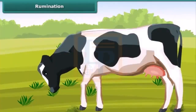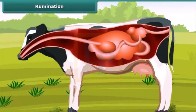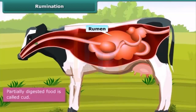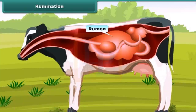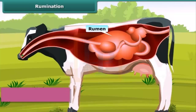Have you observed a cow chewing continuously even when it is not eating? What happens is it quickly swallows the grass and stores it in a rumen, where the food gets partially digested and is called cud. Later, the cud returns to the mouth in small lumps and the animal chews it. This process is called rumination, and these kinds of animals are called ruminants.